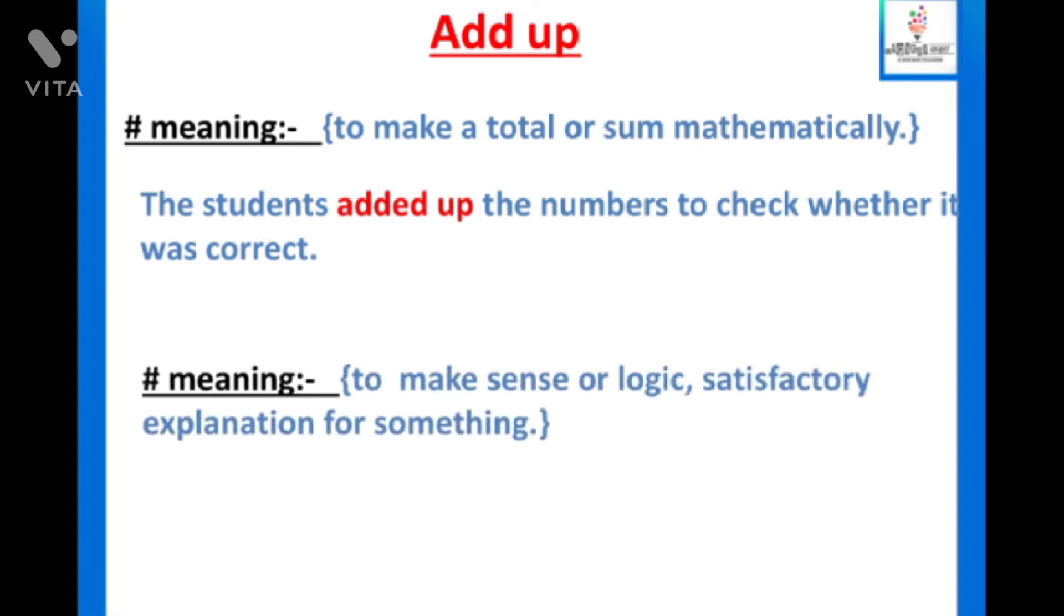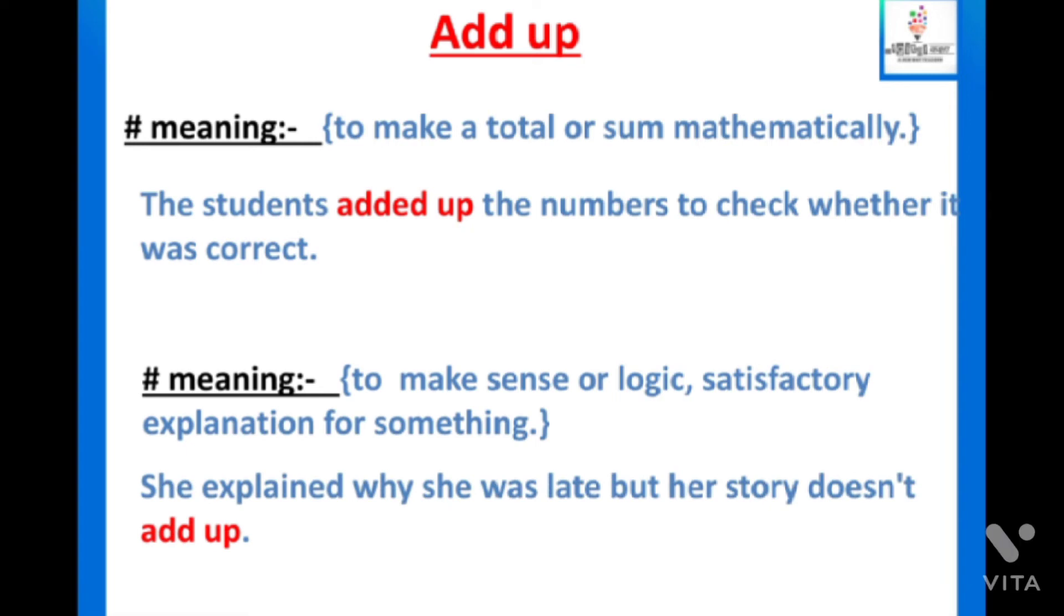Now second meaning, to make sense or logic. Koi aisi cheez jiska sense ho, jiska logic ho. Aur we can say, aise kisi cheez ko explain karna jo satisfactory ho. Matlab, koi usko samaj paaye, koi uspe belief kar paaye. That is add up. Now see the example, she explained why she was late, but her story doesn't add up. Her story, uska koi logic nahi ban raha. For example, agar aap late ho jaye aur aap se koi puche aap late kyu ho gaye, aur agar aap yeh kehte hain ki I have seen a dinosaur, to iska koi logic nahi banega. Anyone can catch you that you are lying. Illogical. Add up means to make a sense, kisi logical baat ko karna.